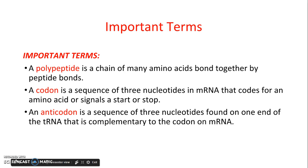An anticodon is a sequence of three nucleotides found on one end of the tRNA that is complementary to the codon on mRNA.